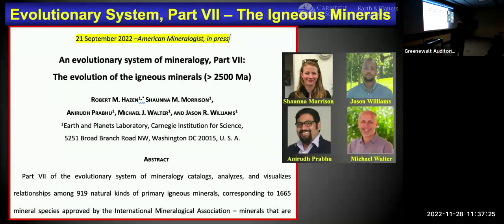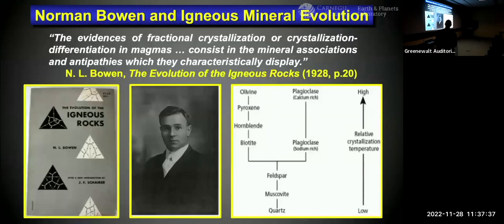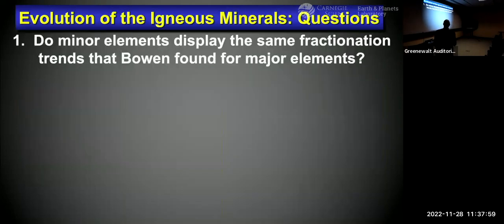Part 7 has just been accepted — a group of Carnegie co-authors and I put this together — on the evolution of igneous minerals, echoing Norman Bowen's work from a century ago on the evolution of igneous rocks. Bowen realized that the evidence of fractional crystallization of magmas consists in mineral associations and antipathies. We're doing the same thing. Key questions: do minor elements display the same fractionation trends Bowen found for major elements? Can we extract phase relationships from associations and antipathies? Can we distinguish melt evolution by fractionation from immiscibility? Have igneous rocks on Earth evolved through deep time?